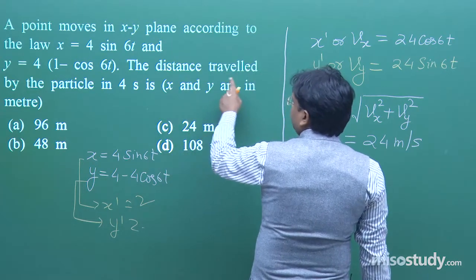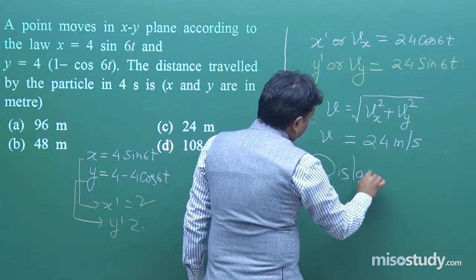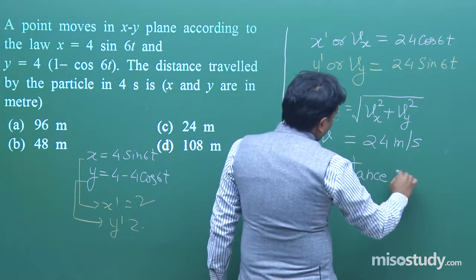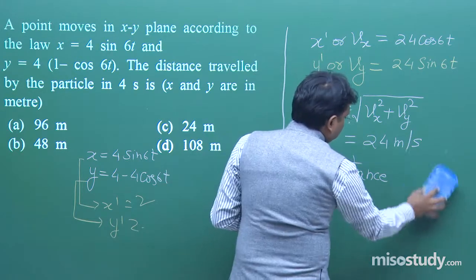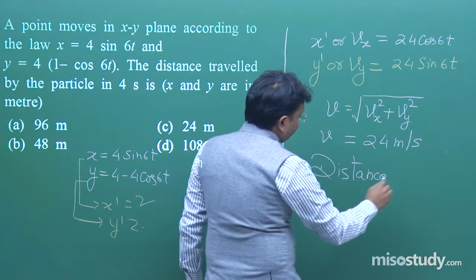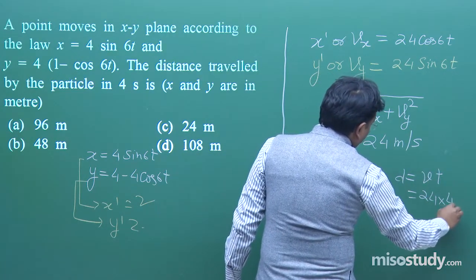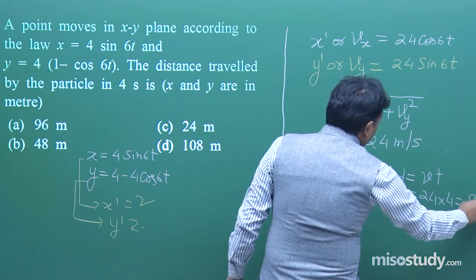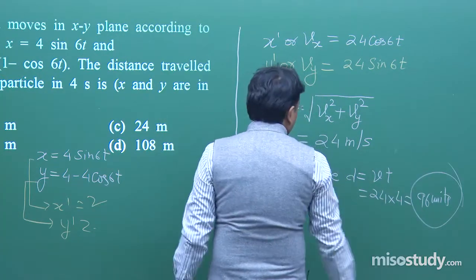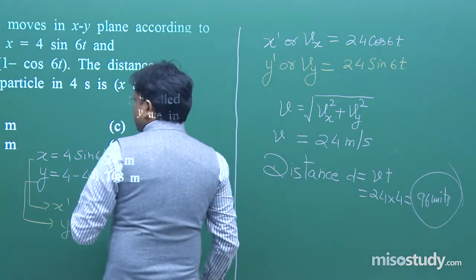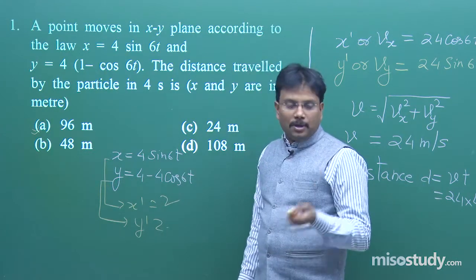Now we have to find the distance travelled by the particle in 4 seconds. Distance d = vt = 24 × 4 = 96 units. So option A is the correct option for this particular question.